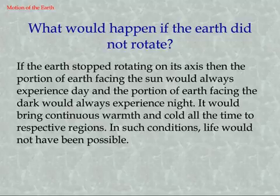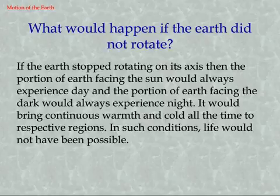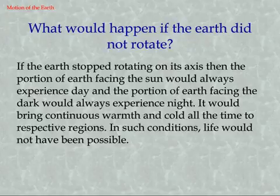What would happen if the Earth did not rotate? If the Earth stopped rotating on its axis, then the portion of Earth facing the Sun would always experience day, and the portion of Earth facing away would always experience night. It would bring continuous warmth and cold all the time to respective regions. In such conditions, life would not have been possible.